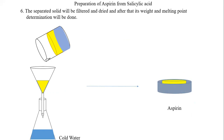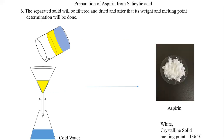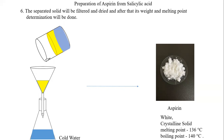After filtration, we get the crude aspirin whose melting point and weight are taken. Aspirin looks like a white crystalline solid with a melting point of 136°C and a boiling point of 140°C. We calculate the melting point to check for impurities — any fluctuation in the melting point, such as getting 125 or 130°C, indicates the presence of impurities. That is why the melting point does not exactly match the value reported in the literature.